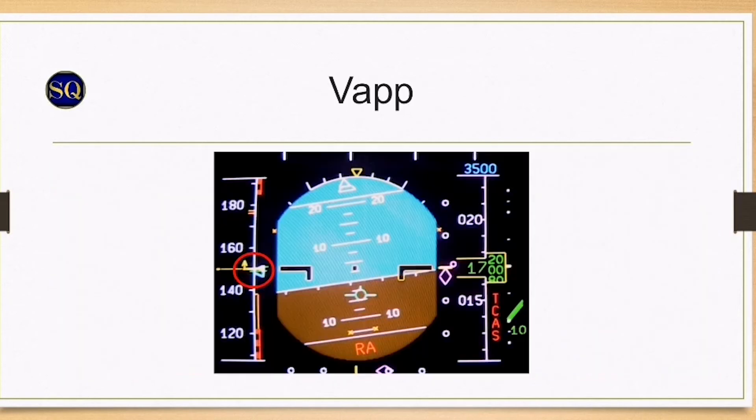On the approach, decelerate and configure to flaps 3. The pilot monitoring will need to check speeds against PFD1 or standby instruments. Do not reduce speed below 140 knots as the emergency generator will stall. The approach speed can now be reduced to V approach VLS plus 10 knots.